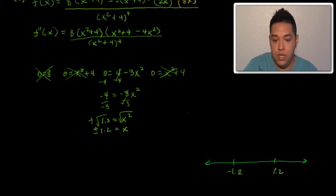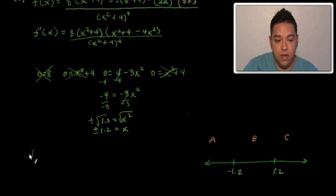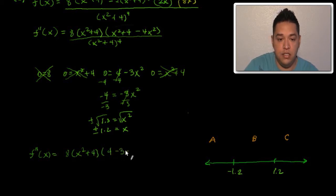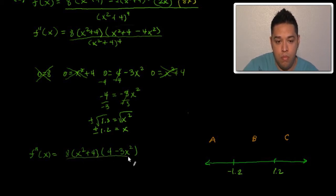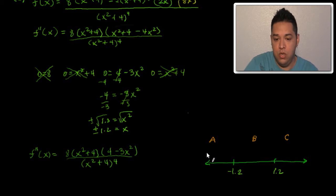Let's draw the number line. We place negative 1.2 and positive 1.2 on it, which gives us three test regions: region A, region B, and region C. We're going to plug test values into our second derivative: f''(x) = 8(x² + 4)(4 − 3x²) divided by (x² + 4)⁴. This is the simplified form we'll use for sign testing.